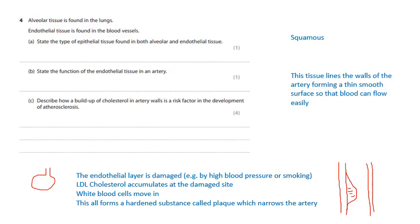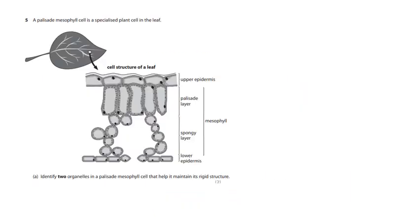A palisade mesophyll cell is a specialized plant cell in the leaf. So this is inside a leaf and we've got the mesophyll is from here to here. That's your mesophyll. And you've got your palisade layer, which is these cells here. And then you've got this spongy layer here and you've got some epidermis above and below that. Identify two organelles in a palisade mesophyll cell that help to maintain its rigid structure. And we know this, this is the cell wall and the vacuole. This keeps it in shape. It maintains the shape of the leaf.